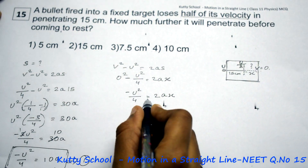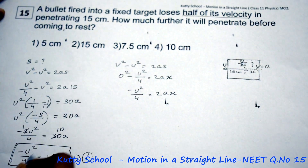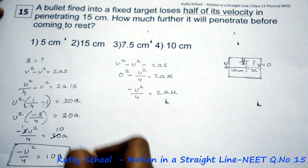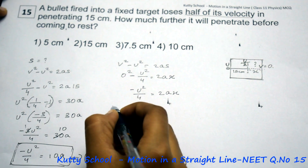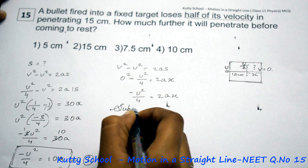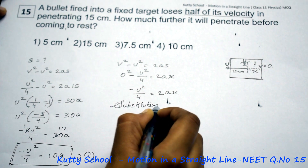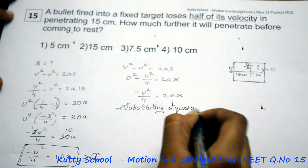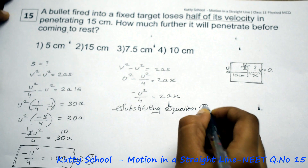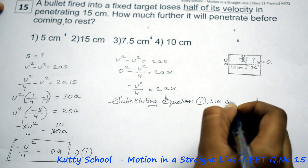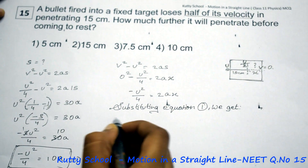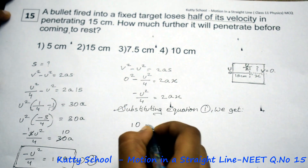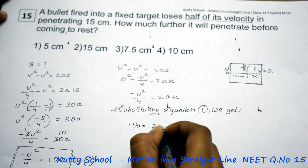Substituting Equation 1 here: minus u squared by 4 equals 10a, so we substitute 10a. This gives us 10a is equal to 2ax.